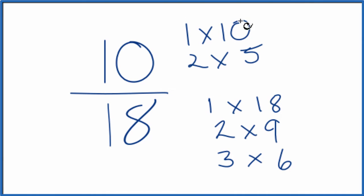So these are the factors of 10 and of 18. We're looking for the greatest common factor, and the greatest common factor is going to be 2.